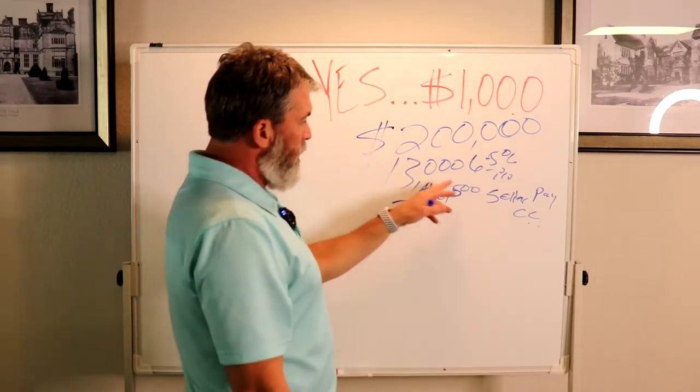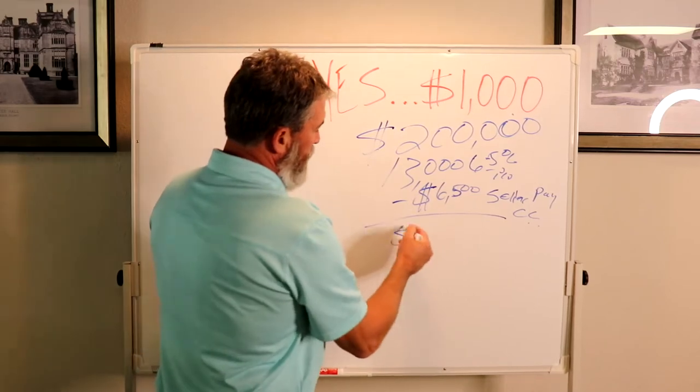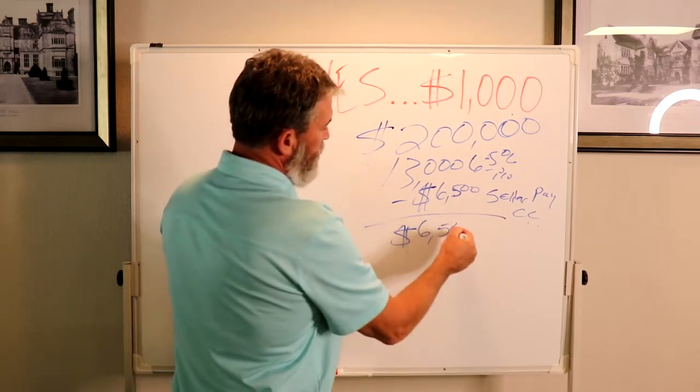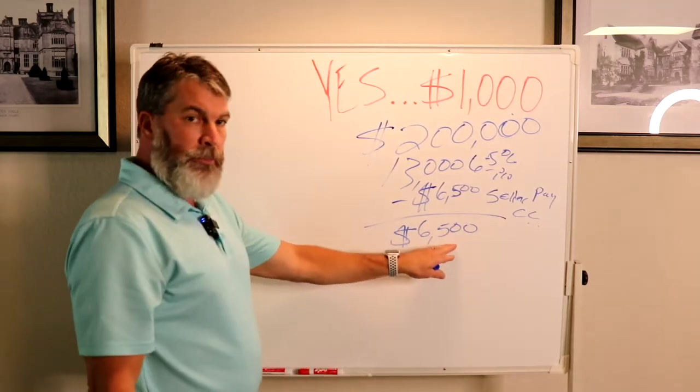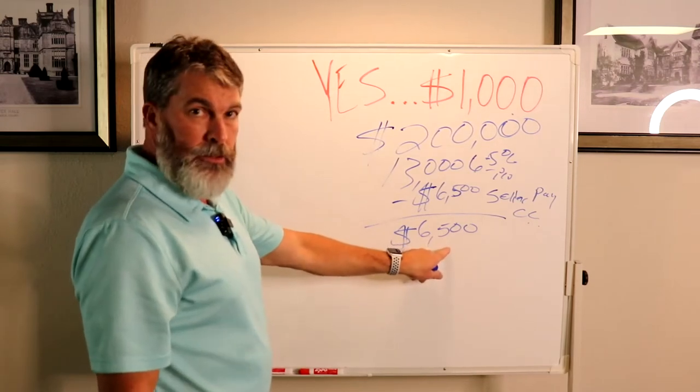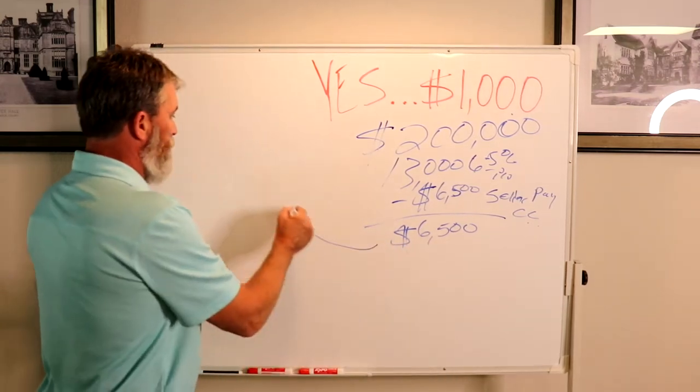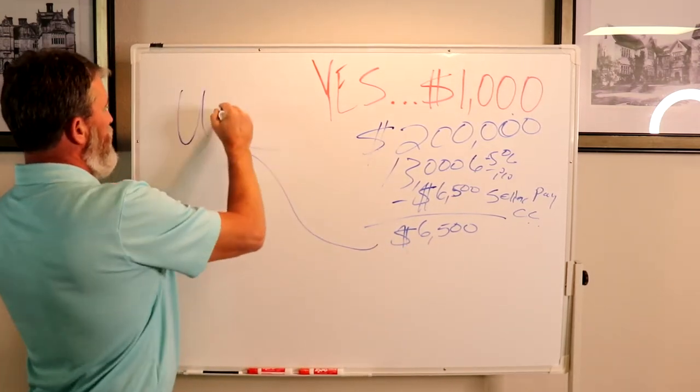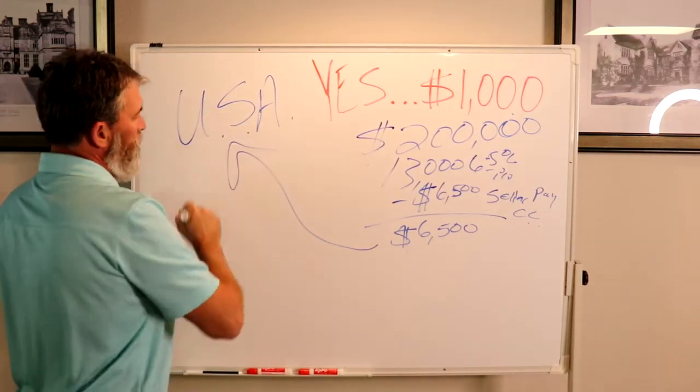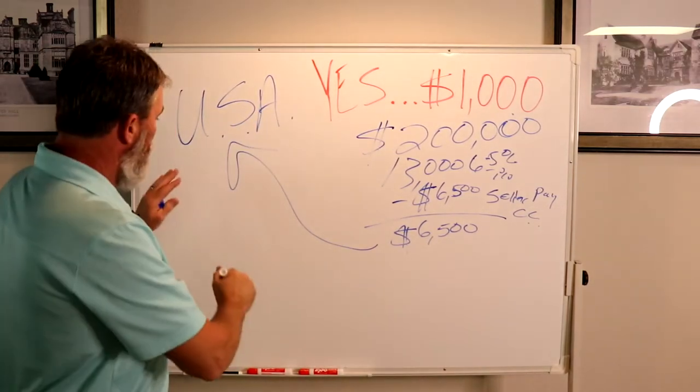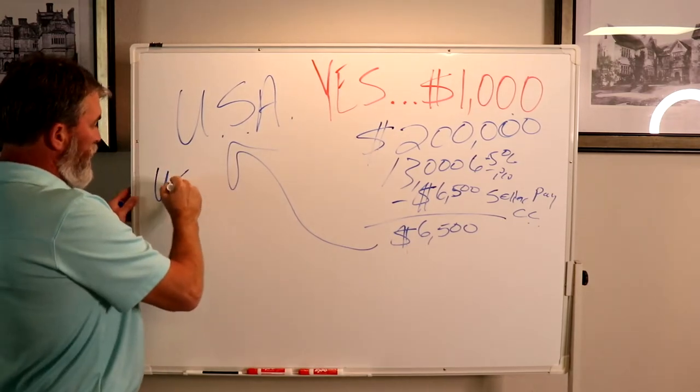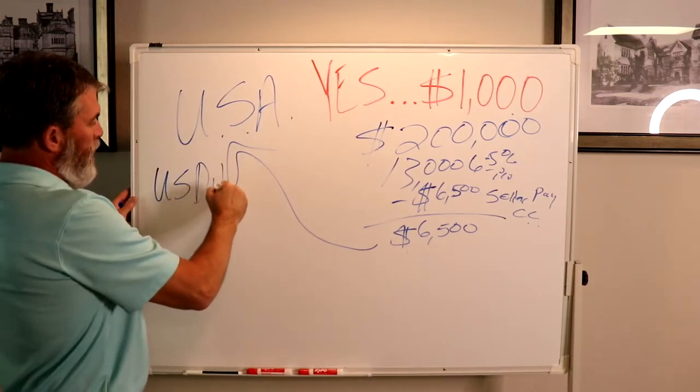Now the seller's paying for it, right? So then you're left with $6,500, and there's your down payment. That comes from this thing called the USA. Yep. So it's underwritten by the United States Department of Agriculture.